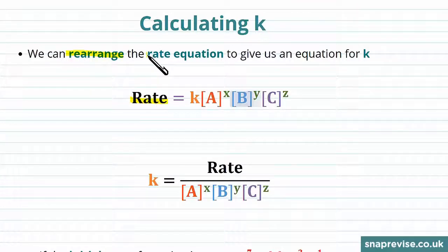We can rearrange this rate equation to give us an equation for the rate constant K. So all we're going to do to rearrange this equation is divide through both sides by the concentrations of all of the reactants raised to the power of their respective orders.